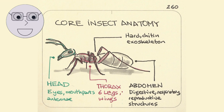To understand the world of insects, we must first understand their anatomy and physiology. Insects have three main body parts: the head, thorax, and abdomen. They also have six legs, two antennae, and often wings.